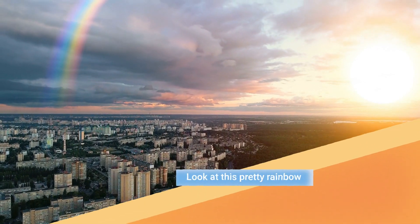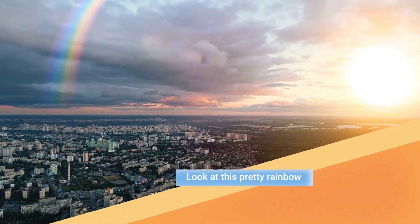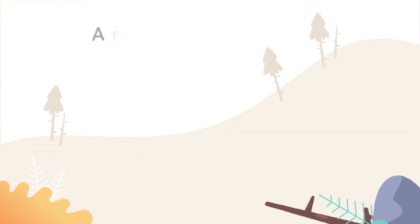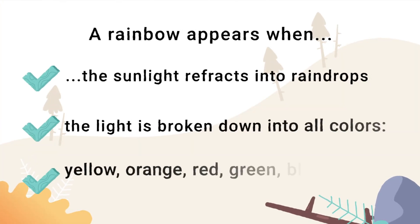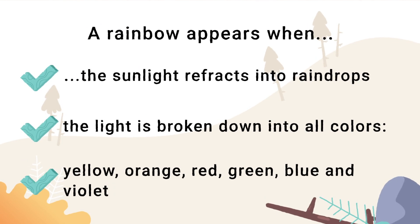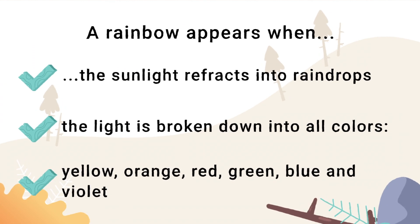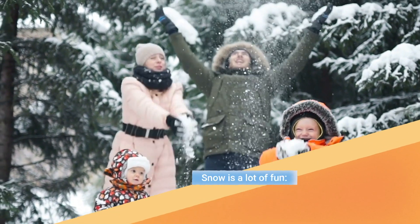Look at this pretty rainbow! A rainbow appears when sunlight refracts into raindrops. The light is broken down into its colors: yellow, orange, red, green, blue, and violet.